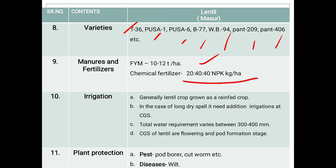Regarding irrigation: generally lentil crop is grown as a rain-fed crop, meaning it is totally dependent on rainfall. In case of a long dry spell, it needs additional irrigation at critical growth stages. The total water requirement is between 300 to 400 mm. The critical growth stages of lentil are flowering and pod formation stage.